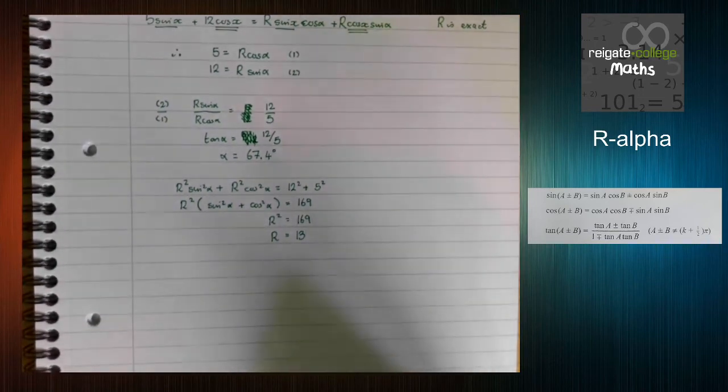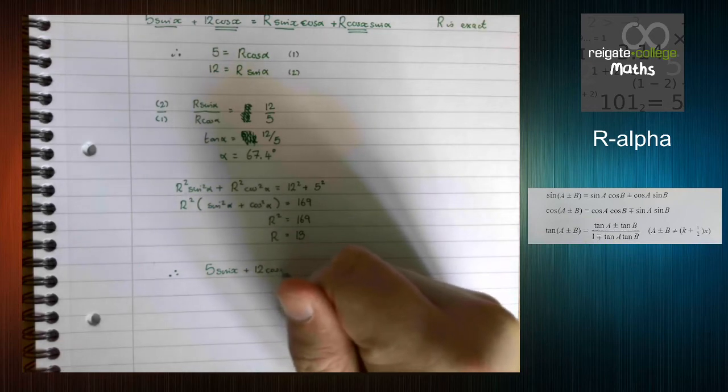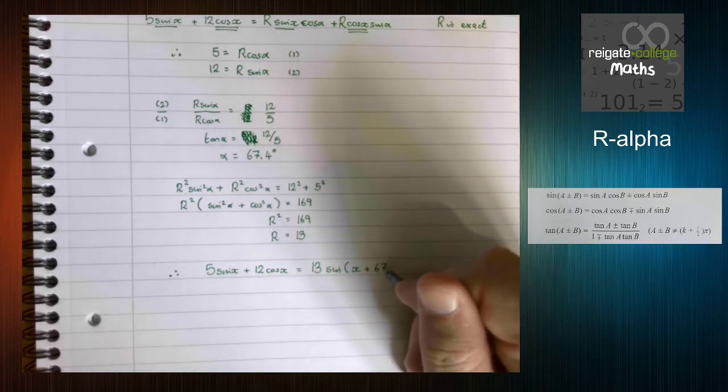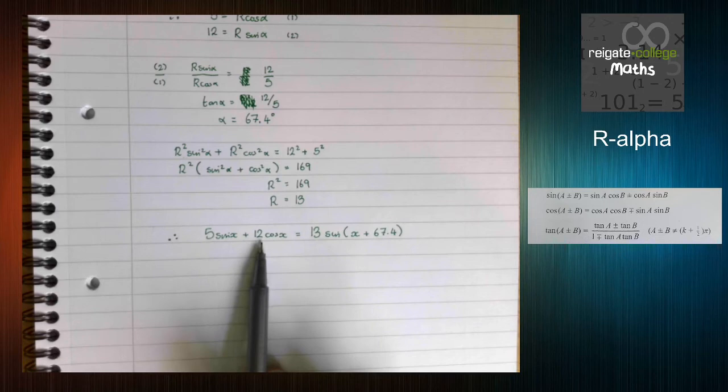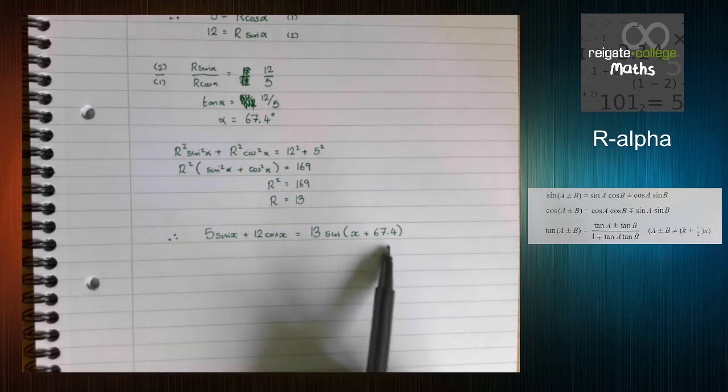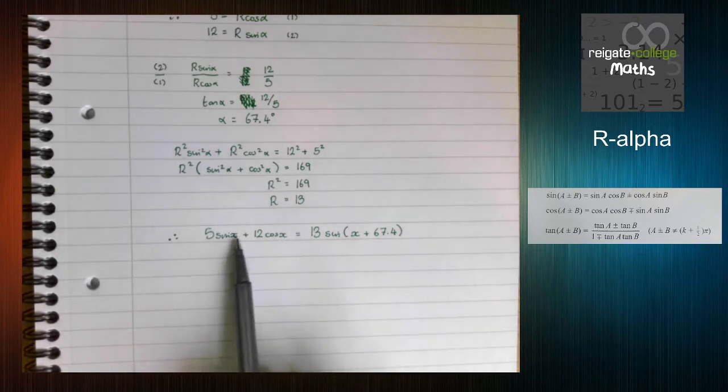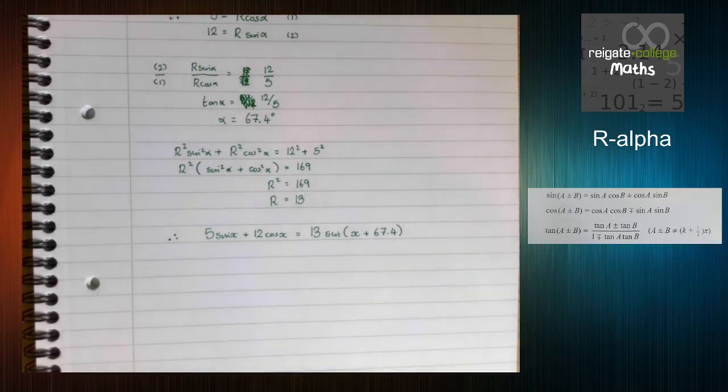So that means that 5 sine x plus 12 cos x is going to be equal to 13 sine of x plus 67.4. So we can now say, what is the biggest value that 5 sine x plus 12 cos x can be? Well, it's 13, because the biggest value of this bit is 1, so the biggest value of this whole thing is 13. Then we can work out when that happens. This also allows us to solve equations. So we could now solve, if we wanted to, 5 sine x plus 12 cos x equals 6, because we know this, and we can solve using normal trig. And that's what we're going to do in the next example.